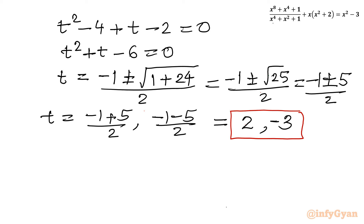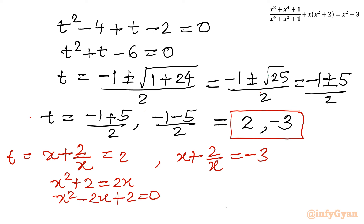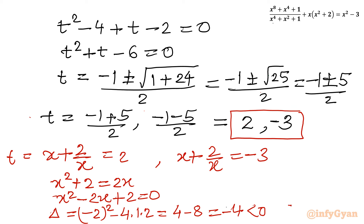Now I substitute back. For t = 2: x + 2/x = 2, so multiplying by x gives x² - 2x + 2 = 0. Checking the discriminant: b² - 4ac = 4 - 8 = -4, which is negative, giving complex solutions. So we reject this equation.